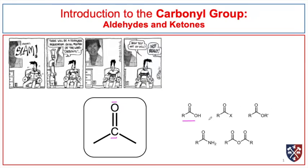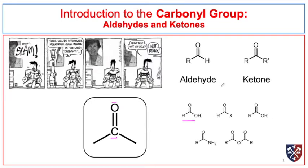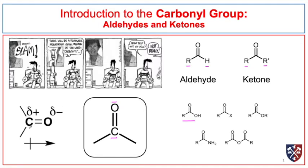First we're going to introduce the carbonyl group by talking about the chemistry of aldehydes and ketones. An aldehyde is a carbonyl group which has a hydrogen bonded on one side, and on the other side can be carbon or hydrogen. Ketones have the carbonyl group with a carbon bonded on each side. The chemistry of these two types of compounds is pretty similar, with some slight differences due to one containing a carbon-hydrogen bond on the carbonyl carbon.